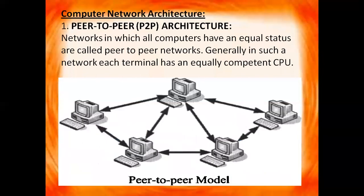Next we have computer network architecture. Computer network architecture means how we arrange the computers in a network. Here we have peer-to-peer or P2P architecture. Networks in which all computers have an equal status are called peer-to-peer networks. They have equal capability.